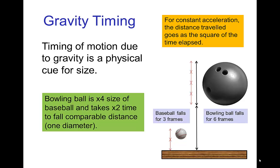If we have a larger object like a bowling ball, which is four times larger in size, it takes six frames to fall a distance equal to its own diameter. So if on screen we see something fall a distance visually equal to its own diameter in six frames, we know that object is roughly the size of a bowling ball. The slower the timing, the larger the object.